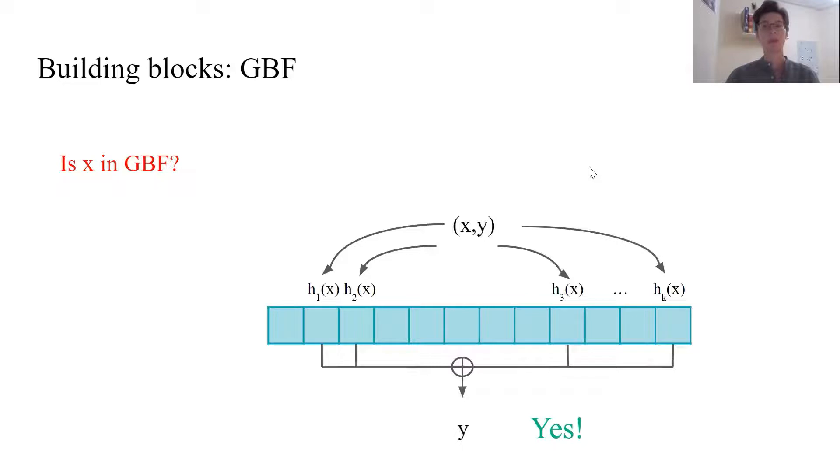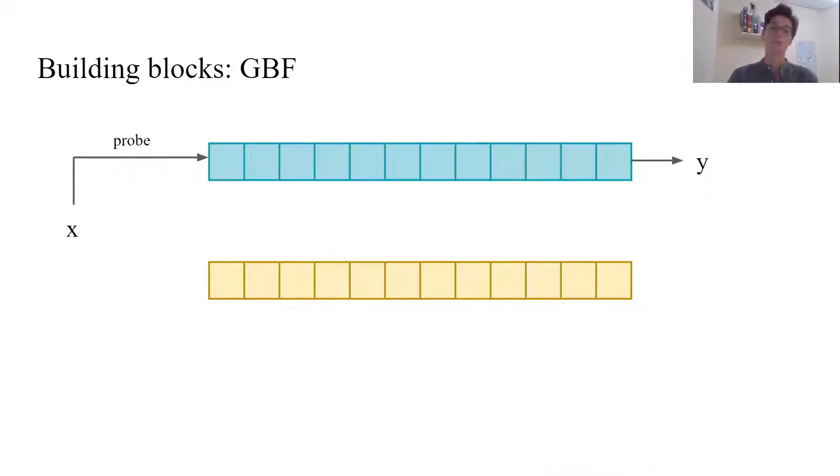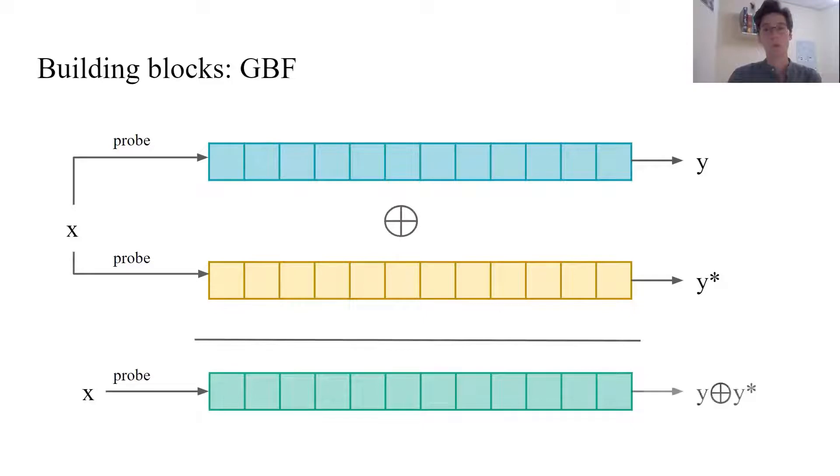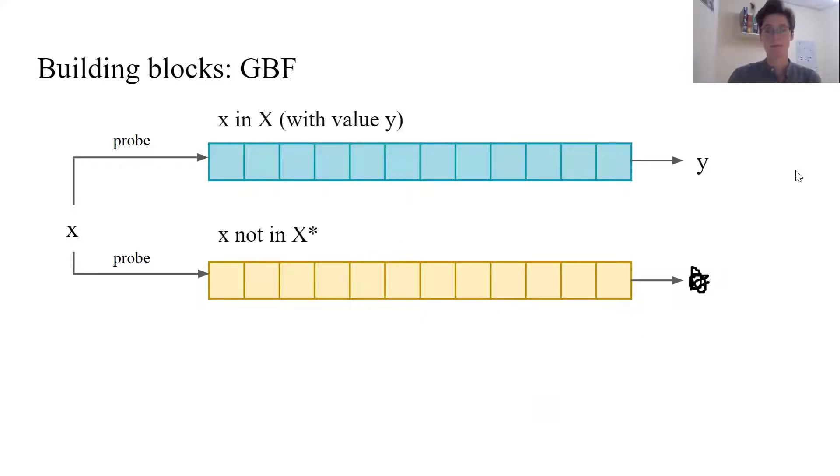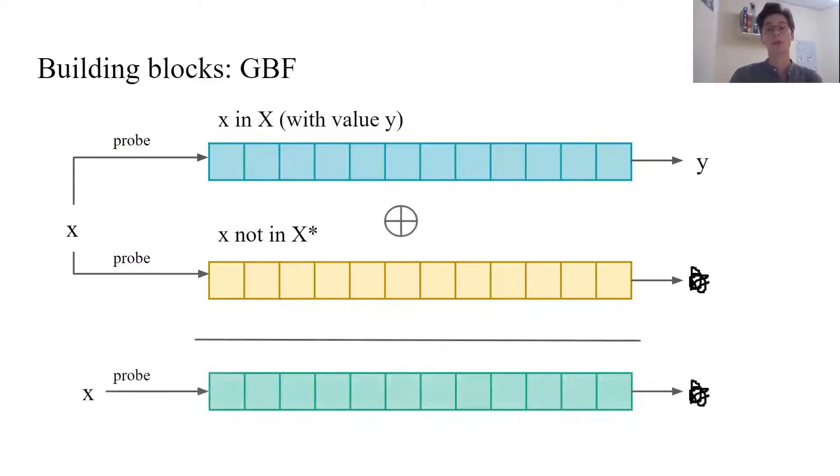Having GBF, the item X and the value Y, it's possible to check if X is in GBF or not. In the case if X is not in GBF, the probe returns some random value, which is with high probability not Y. GBFs are additive. If X has the value Y in the first GBF and Y star in another, then its value in XOR of GBFs is Y XOR Y star. If X is not in even a single set, then the probe returns some random value. Thus, XOR of GBFs for the sets is the GBF of the intersection of those sets.